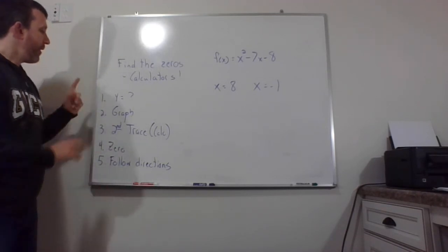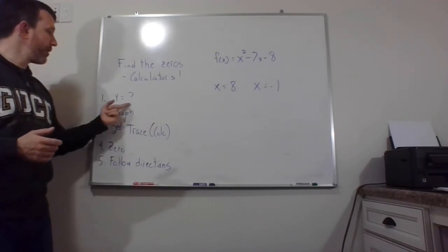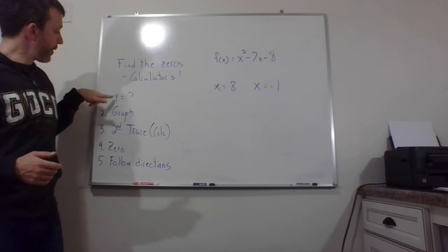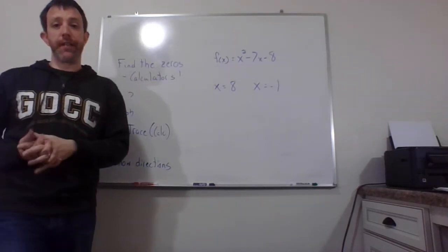All right, so first, hit that y equals button. Once you do, type in the function. So instead of having f of x, we're going to use y. And for this, you just type x squared minus seven x minus eight.